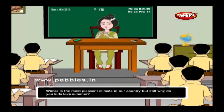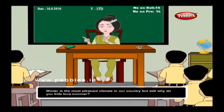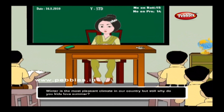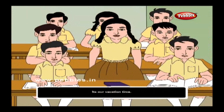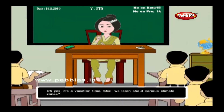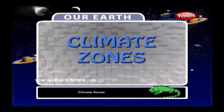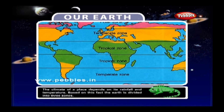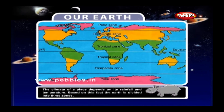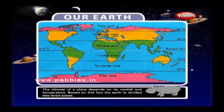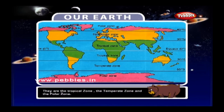Winter is the most pleasant climate in our country, but why do kids love summer? It's vacation time! Shall we learn about various climate zones? The climate of a place depends on its rainfall and temperature. Based on this, the Earth is divided into three zones: the Tropical Zone, the Temperate Zone, and the Polar Zone.